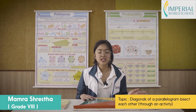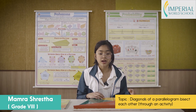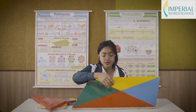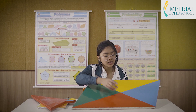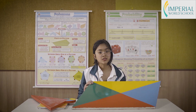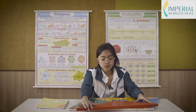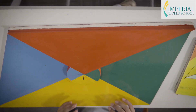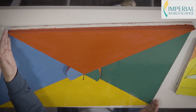Hello everyone, I'm Mama Shrestha and I'm going to show you all how the diagonals of a parallelogram bisect each other. So over here I have a parallelogram. It has two diagonals and I'm going to show you how the middle point bisects both of these — how there's a line in the middle that they're both connected to. Now I'm going to show you that this intersection is the midpoint of both of these diagonals.